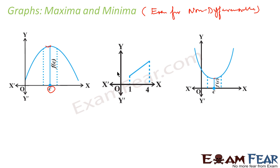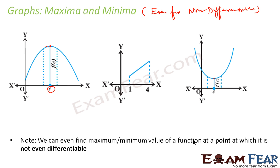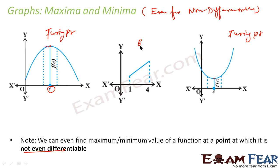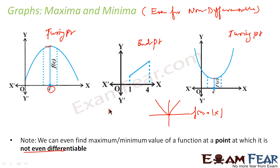The observation is: first, we can find the maximum and minimum of a function at a point even if it is not differentiable. Using a graph, in this case the maximum occurs at a turning point. Here also it is a turning point. This graph's maximum and minimum is at an end point. Another example: f(x) = |x|. The minimum occurs here, and this point is a non-differentiable point. For this graph also I am able to find the maximum and minimum just by looking at the graph.